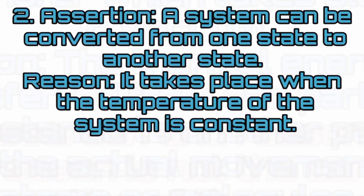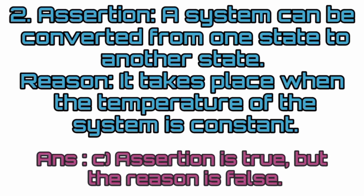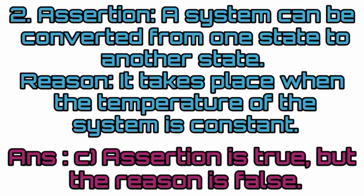Question 2. Assertion: A system can be converted from one state to another state. Reason: It takes place when the temperature of the system is constant. Assertion is true, but the reason is false. Answer: Option C.